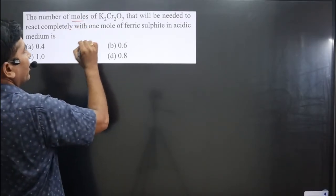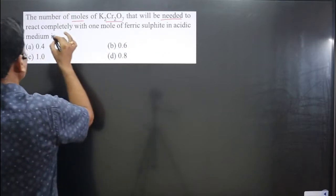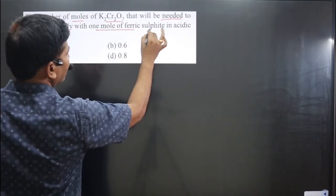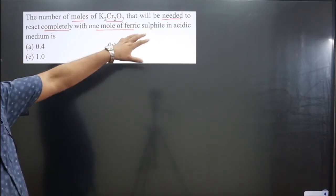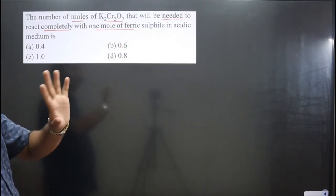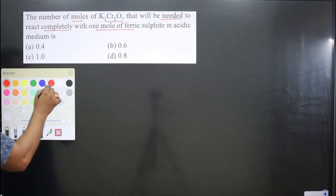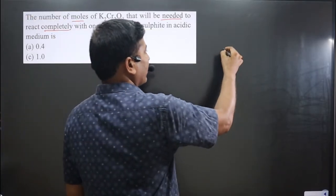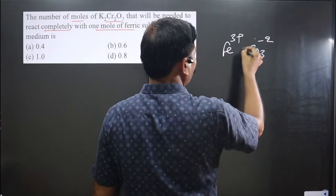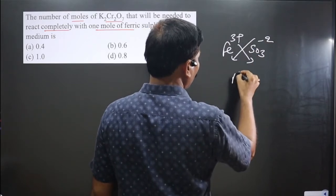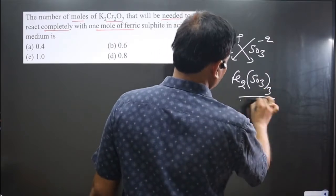The question asks for the number of moles of K₂Cr₂O₇ needed to react completely with one mole of ferric sulfite in acidic medium. Ferric sulfite — note it is ferric, not ferrous — means iron is present in the +3 oxidation state. Sulfite is SO₃²⁻. Cross-multiplying, the chemical formula of ferric sulfite is Fe₂(SO₃)₃.